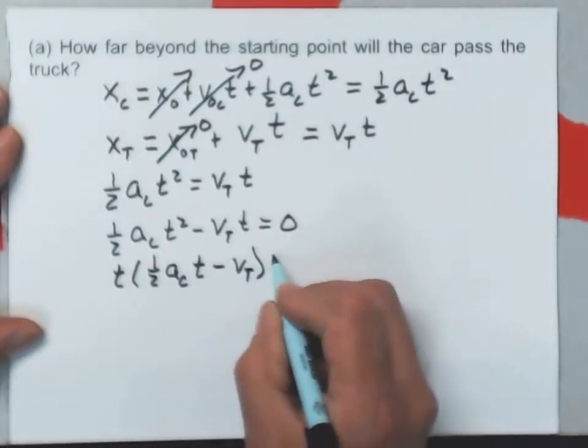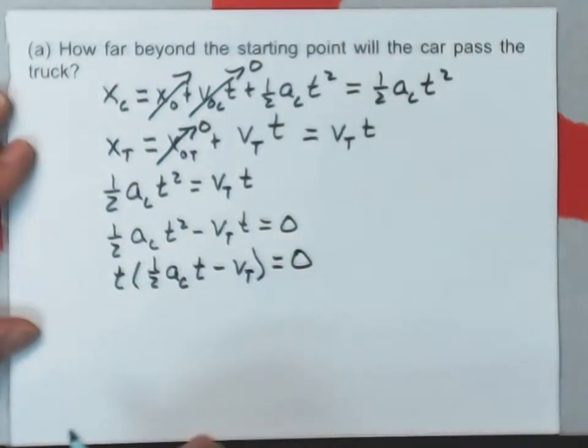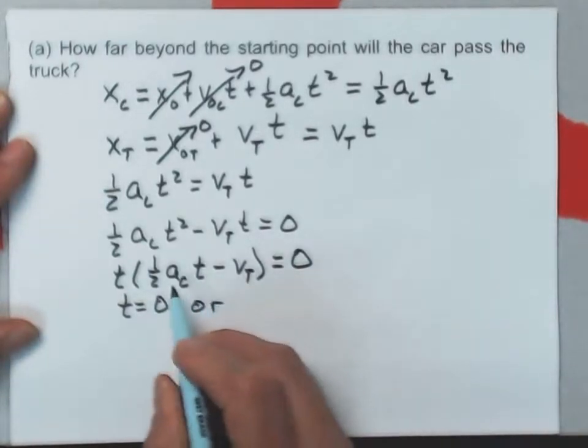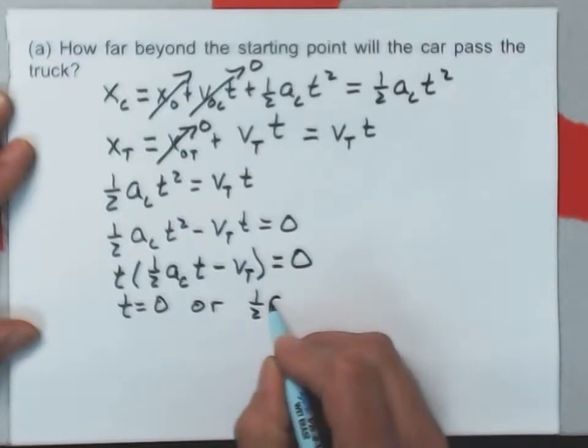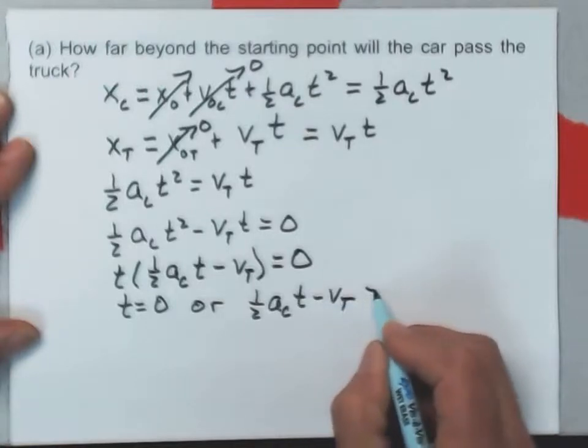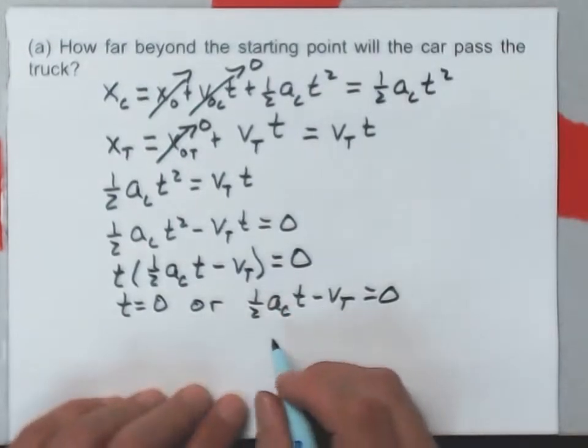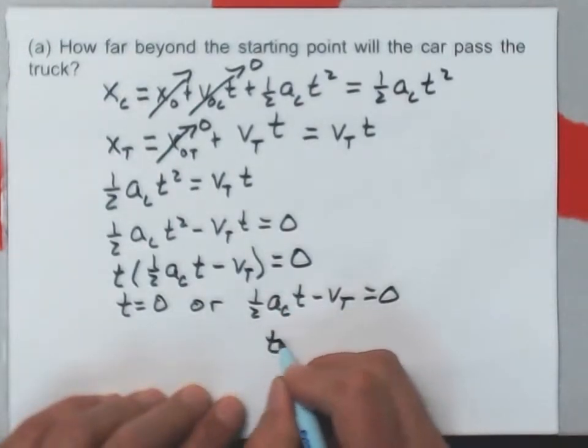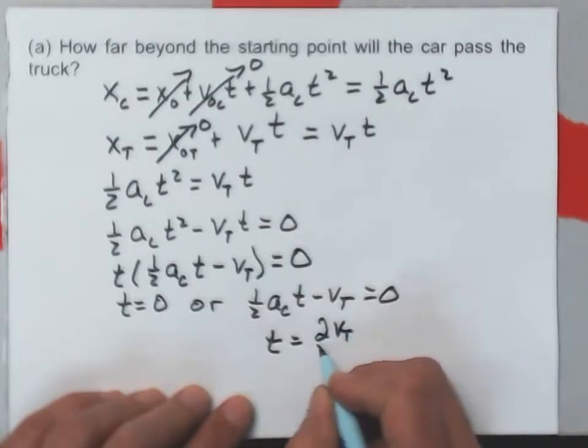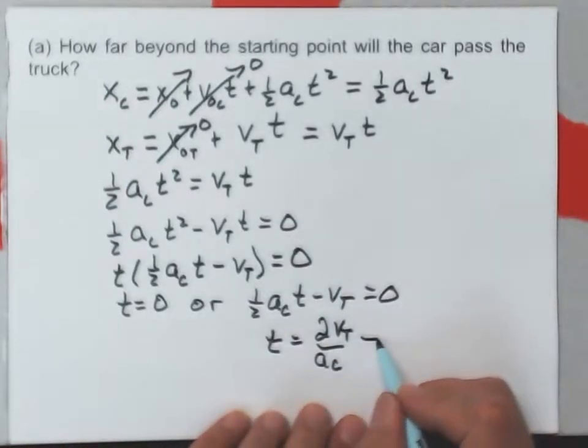When you have two things multiplied together equaling zero, either this one's zero, either this one's zero, t equals zero, or this one's zero. And if I solve this for the velocity, or for T, excuse me, I would get T equals two times the velocity of the truck over the acceleration of the car. That's about three algebra steps at one time there.